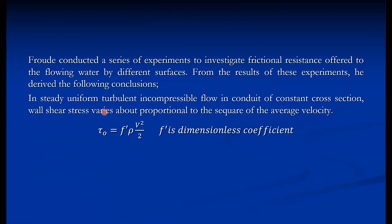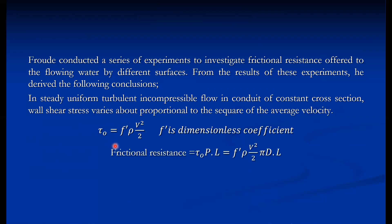Dimensional analysis techniques are also used to derive the functional relationship between frictional resistance and other parameters. It is found that the wall shear stress τ equals f′ρV²/2, where f′ is a dimensionless coefficient called the coefficient of friction. Secondly, the frictional resistance F_d equals shear stress times circumferential area: τ × π × d × L. So F_d = f′ρV²/2 × πdL. This resistance formula is used when fluid flow is turbulent.